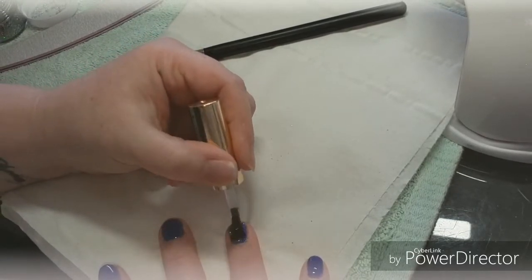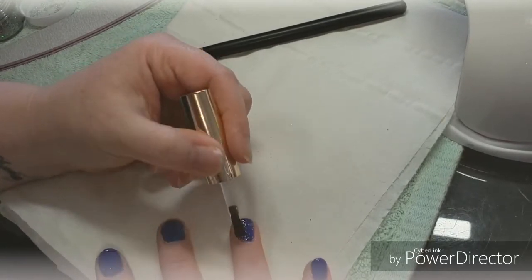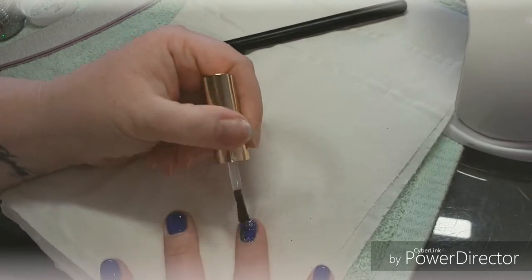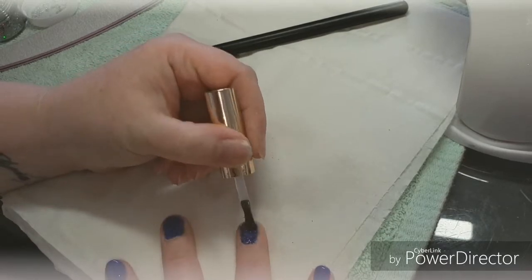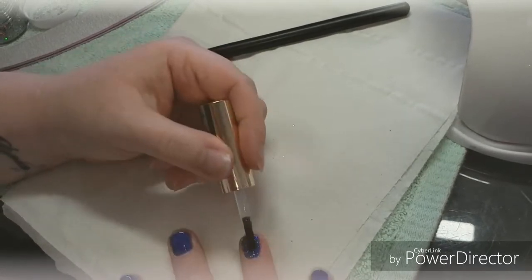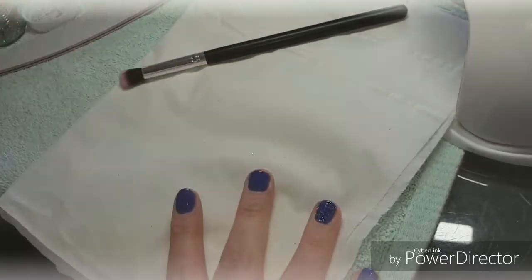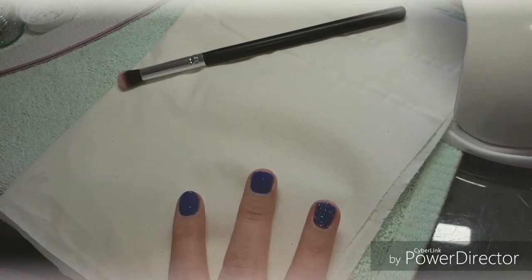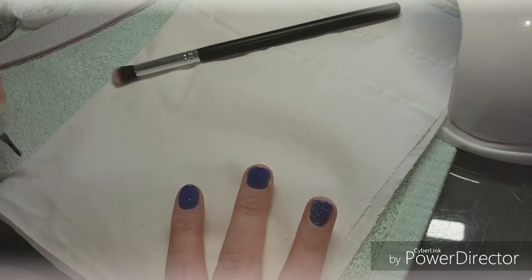I did notice there was a piece of glitter on my brush so you'll see me wipe that off on the tissue in a moment, because we don't want to contaminate the bottle. Then just pop them in my lamp for 60 seconds again.